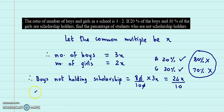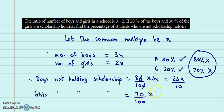Likewise, we can find the number of girls not holding scholarship. That will be 70% of the total girls: 70 upon 100 into 2x. Canceling one zero, this gives us 14x upon 10.